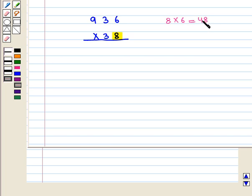So at units place we write 8 and place 4 above the tens. Now 8 times 3 is 24 plus 4 is 28. Again it is a 2-digit number, so at tens place we write 8 and place 2 above hundreds.